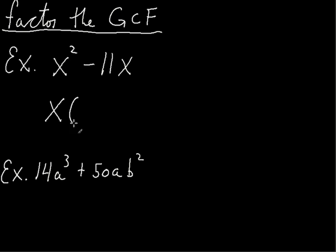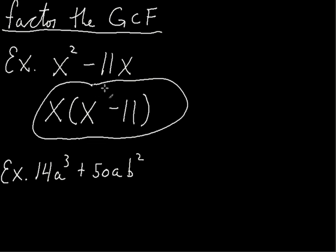So what did we leave behind? I'm going to put in parentheses what we left behind. So here we left behind an x because x times x is x squared. And then we left behind a negative 11 here. So I factored out an x. This would be our first factoring problem that we accomplish.